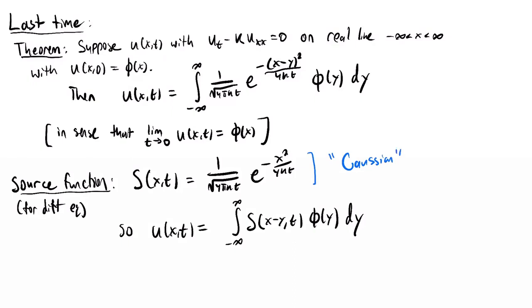The Gaussian arises frequently in statistics and probability theory, where it's related to bell curves and normal distributions. There's actually a very deep reason why this Gaussian appears, connected to probability theory, but that's a bit too advanced for this course.